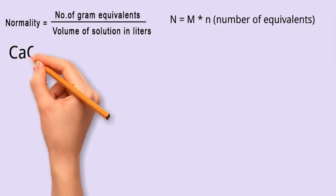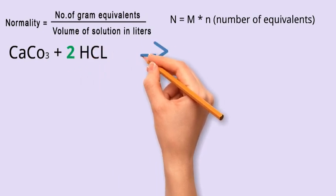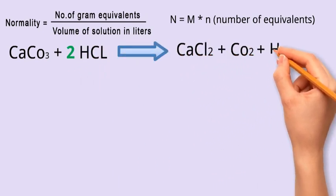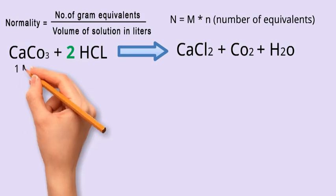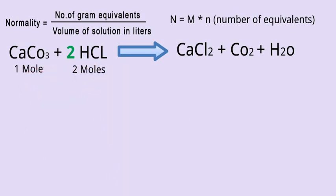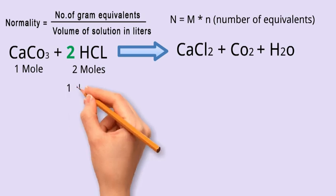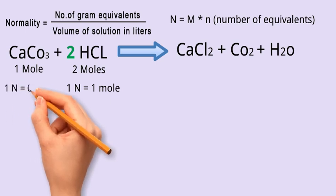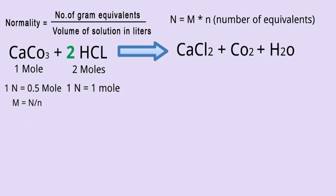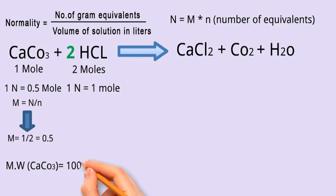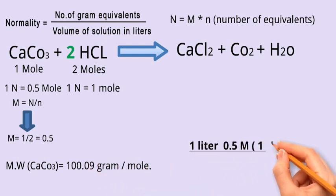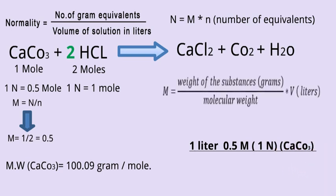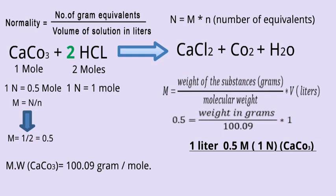For example, calcium carbonate reacts with two equivalents of hydrochloric acid to produce calcium chloride, carbon dioxide, and water. In this case, one mole of calcium carbonate can react with two moles of hydrochloric acid. So for one N of hydrochloric acid, which is also equal to one mole, you should prepare one N of calcium carbonate, which is equal to 0.5 moles, if you divide N by the number of equivalents. The molecular weight of calcium carbonate is 100.09 grams per mole. So to prepare one liter of 0.5 moles of calcium carbonate, we use this equation. The result is 50.045 grams.